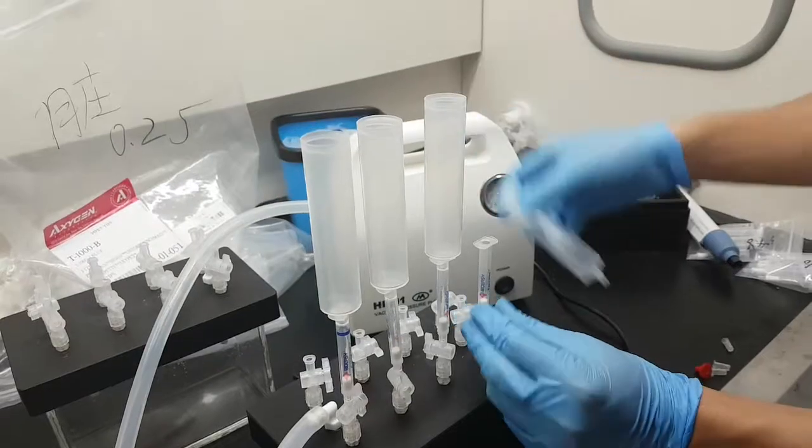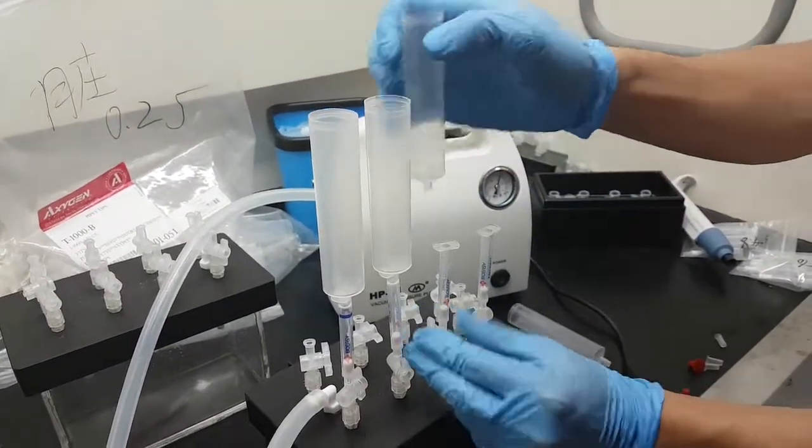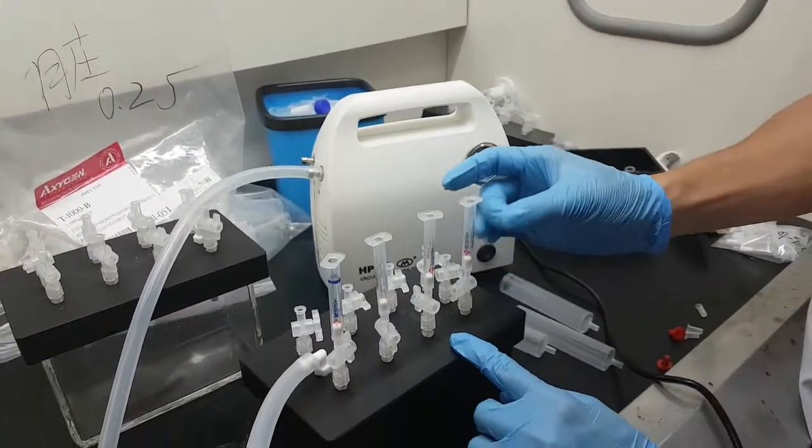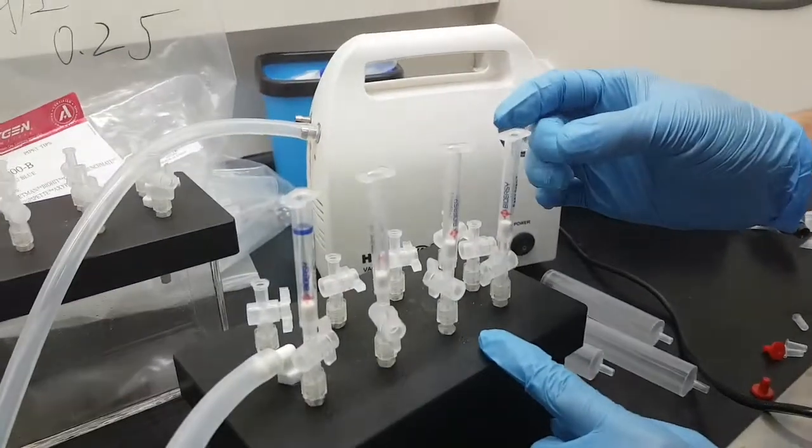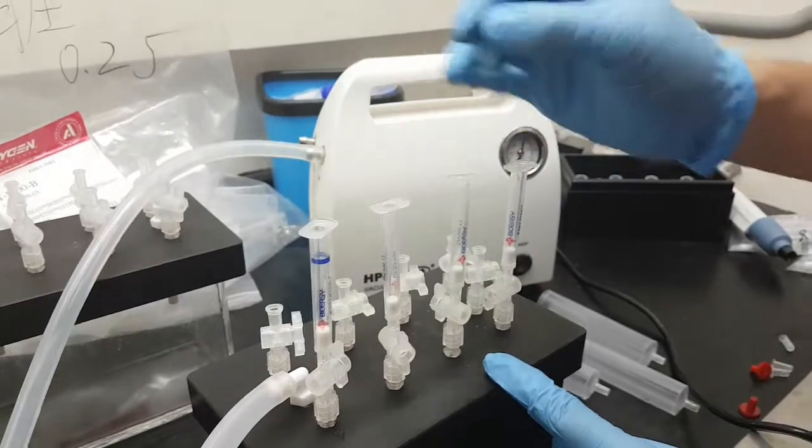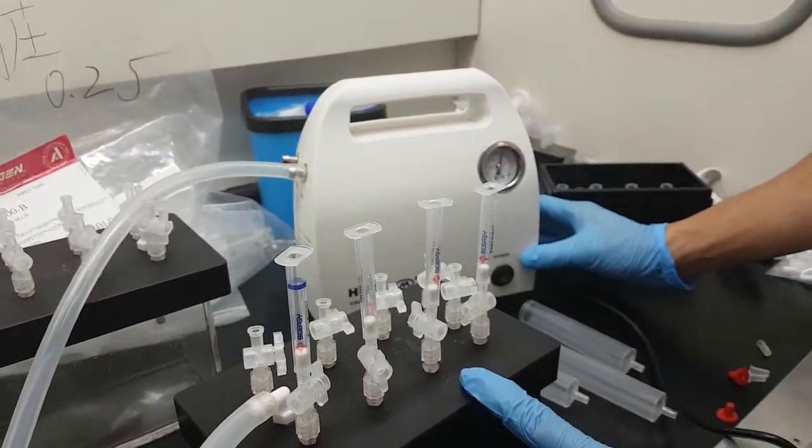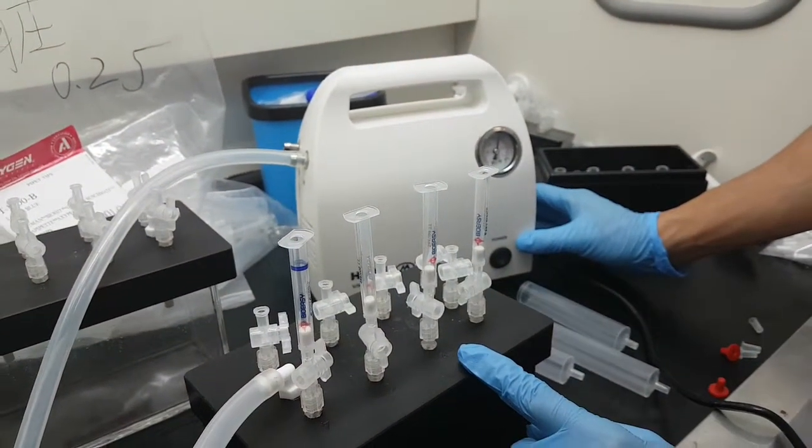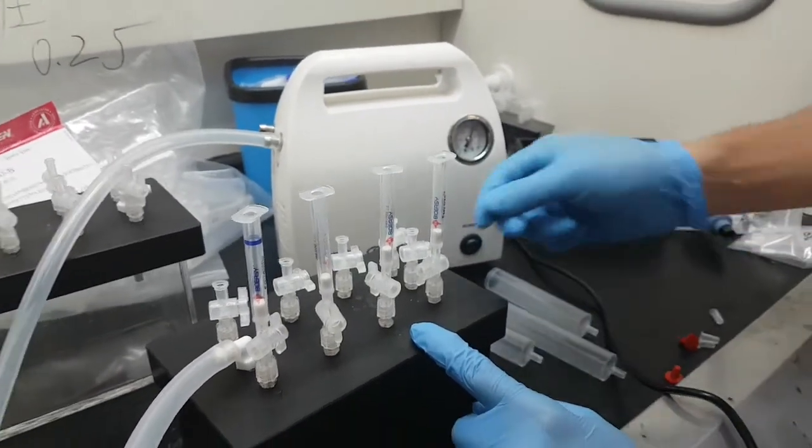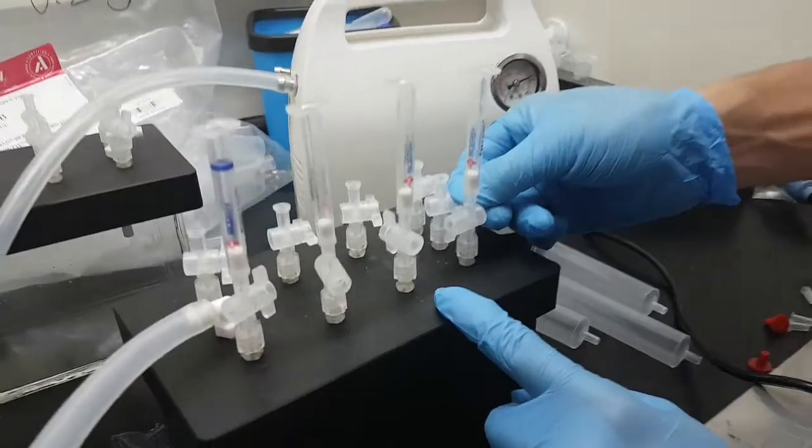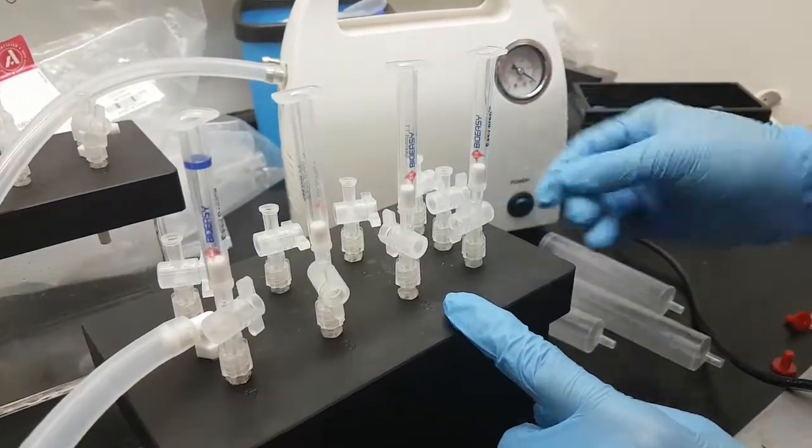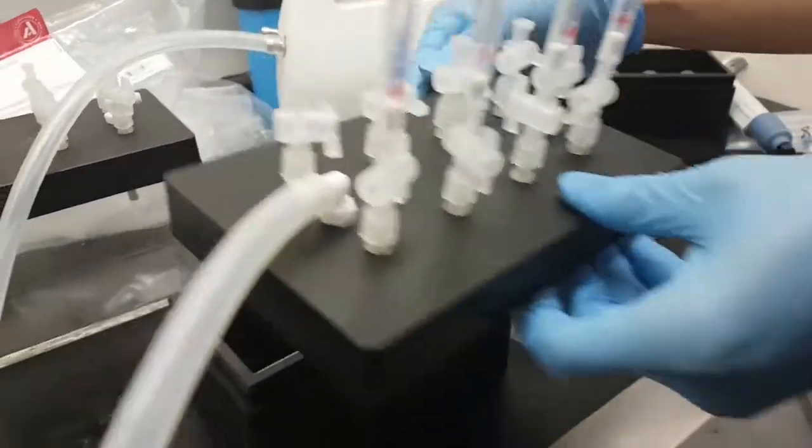All the liquid should flow through the extraction column. Take out the syringe and use the finger to pinch a bit. So it will take about 10 seconds from the moment we take out the syringe. Now we turn off the vacuum pump, release the pressure, and open the cover.